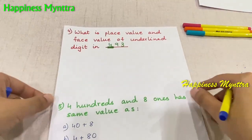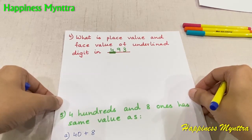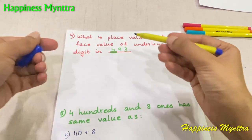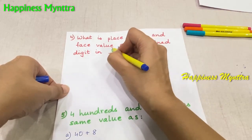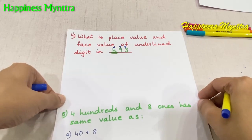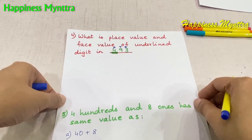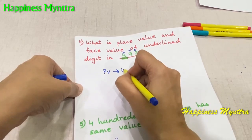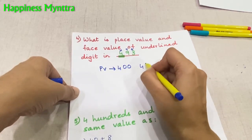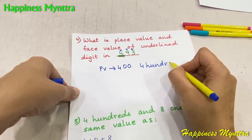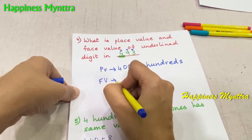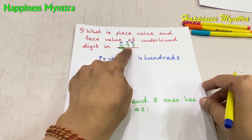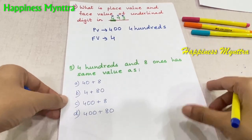Next: what is the place value and face value of the underlined digit? The underlined digit here is 4. As mentioned earlier, we should first write the place values on top to make our job easier and get children in the habit of doing this right from the beginning. The place value is 400, or four hundreds, whereas the face value is the number itself — always. So the face value of 4 is 4, the face value of 9 is 9, and so on.